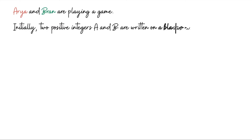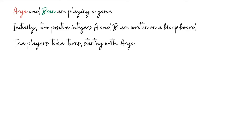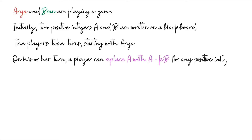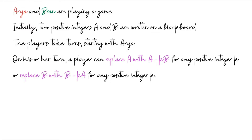This is a two-player game. The players are Arya and Bran, and they are given two positive integers a and b written on a blackboard. It's a turn-based game starting with Arya. There is no passing — when it is your turn you have to make a move. On your turn, you can either update a with a minus k·b, or update b with b minus k·a, where k is some positive integer. The numbers must strictly decrease.